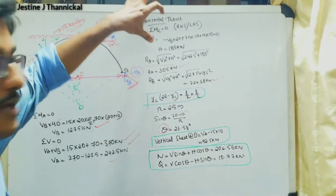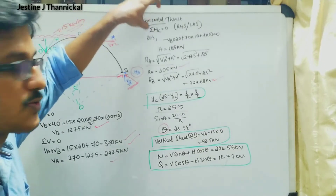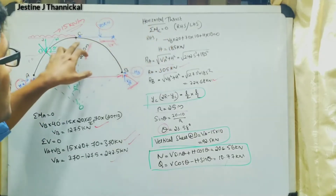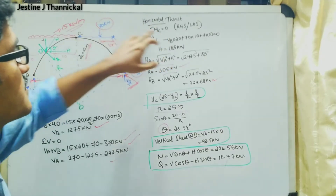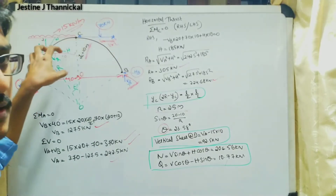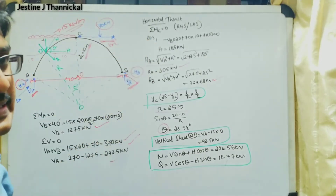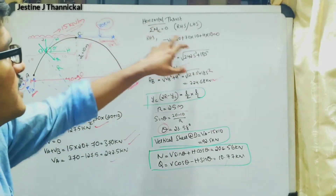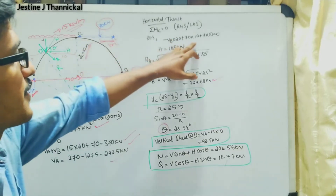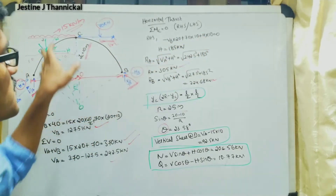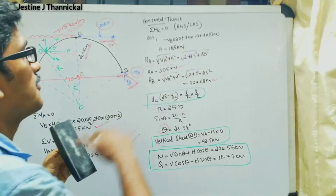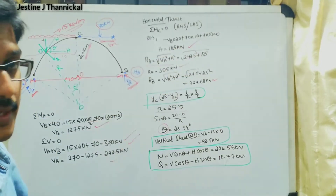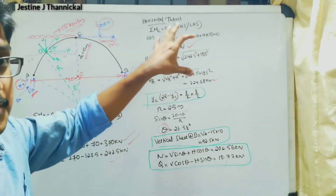To find the horizontal thrust, we use the crown hinge condition, taking moments about the crown point C considering the right hand side. Setting the moment to zero: minus VB into 20, then 70 acting in the clockwise direction, and the horizontal force also contributing. Solving this gives the horizontal thrust H equals 185 kilo Newton. Please verify the calculation yourself.